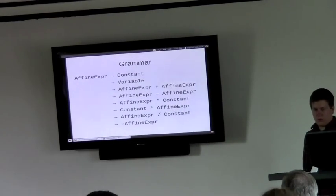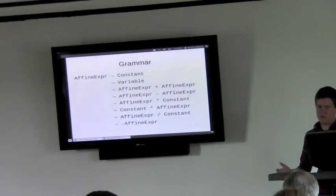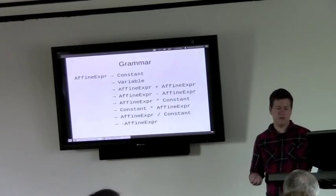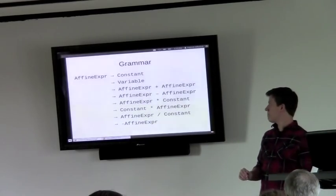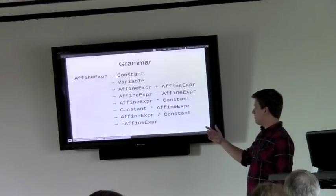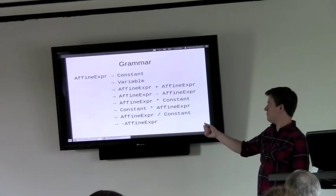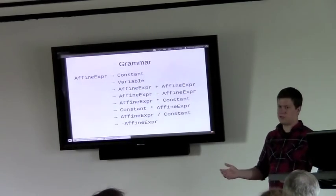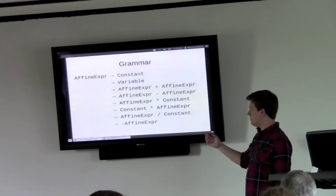So we can build expressions, but so far, you know, anything that we throw in there will be built into an expression tree. We want to make sure that it actually is a valid linear program. So we define a grammar as some production rules. Affine expression is, just means something that's valid in our linear program here. So it can be a constant, a variable. You can add or subtract two affine expressions. You can multiply an affine expression by a constant.